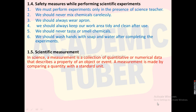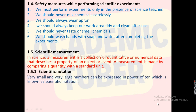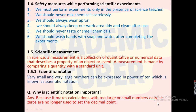Scientific measurement: In science, a measurement is a collection of quantitative or numerical data that describes a property of an object or event. A measurement is made by comparing a quantity with a standard unit. Scientific notation: Very small and very large numbers are expressed in powers of 10, which is known as scientific notation. It is very important because it makes calculations with very large or small numbers easy — zeros are no longer needed to set the decimal point.